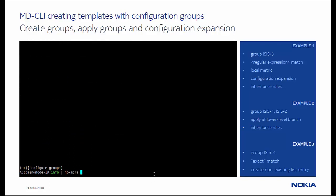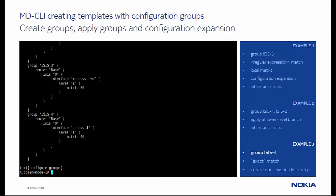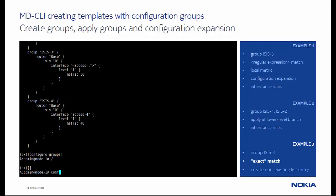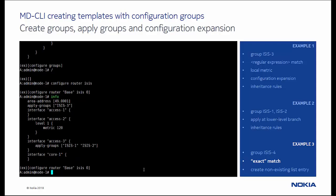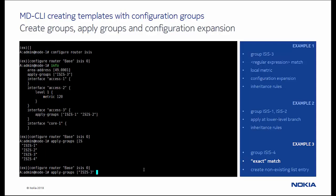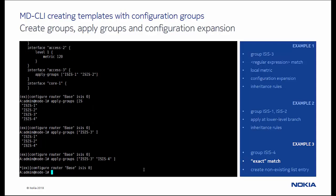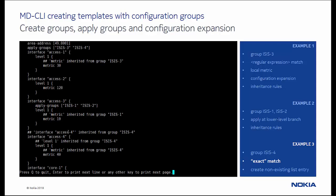For the final example, we created the configuration group isis4, which uses the exact match statement and access4, without angle brackets. Next, we apply this configuration group. Notice that with an exact match statement in the configuration group, interface access 4 is automatically created, and metric 40 is inherited from this group, isis4.